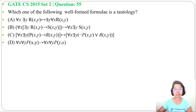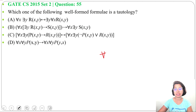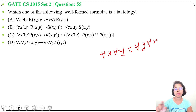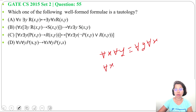In case of nested quantifiers, if both quantifiers are the same, then we can switch. Like universal-universal, we can switch: for all x, for all y is equivalent to for all y, for all x. But if both are different, then we cannot switch — the meaning will be changed. Like we cannot switch 'for all x, there exists y'; it's not equal to 'there exists y, for all x'.